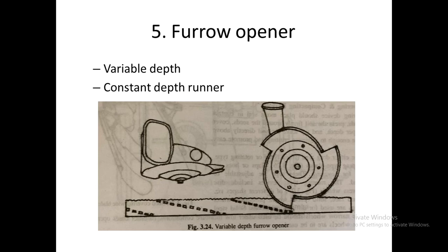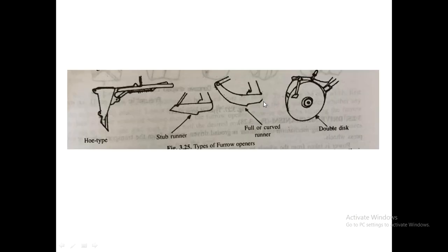The fifth component of a planter is the furrow opener. There are two types: variable depth and constant depth runners. In the variable depth runner, the depth of the furrow can be adjusted. A rotating disc with three sharp blades attached creates furrows at different depths in the field.